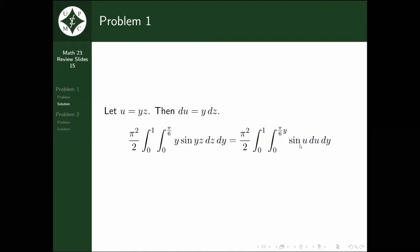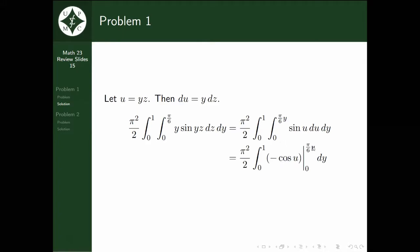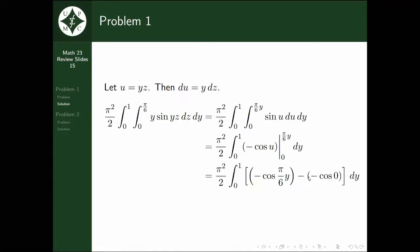We integrate sine u, which is negative cosine u, and evaluate it at πy/6 and 0. Cosine of πy/6 we can't really evaluate, so we'll just leave it as is. But cosine of 0 we can always evaluate as 1. So it becomes -cos(πy/6) + 1.